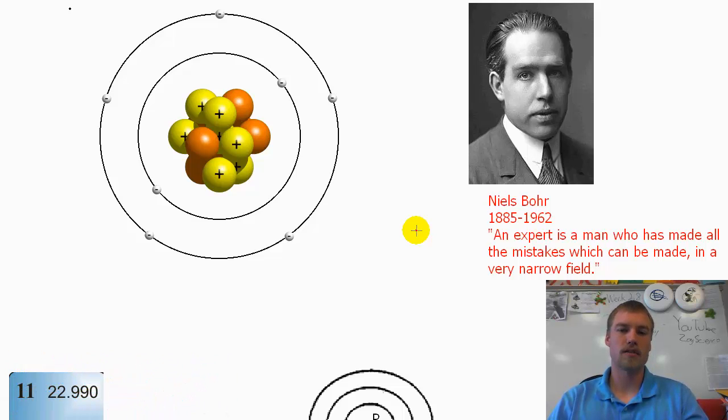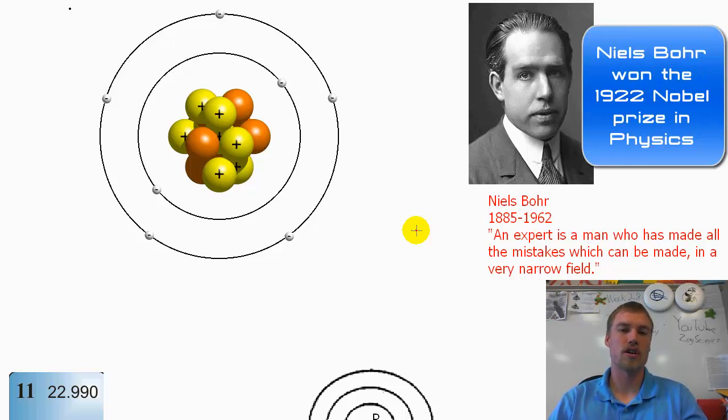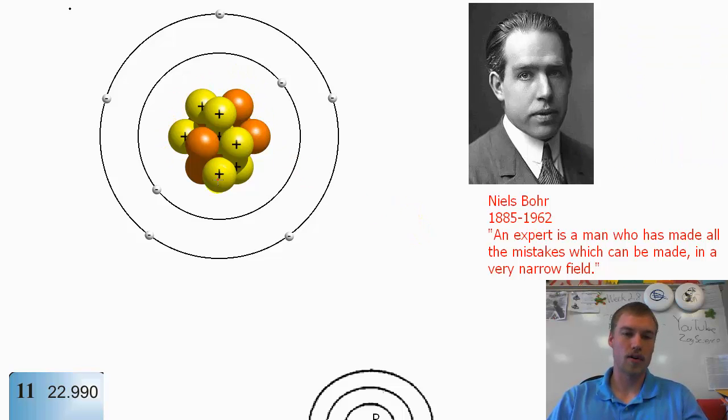The Bohr model was put forward by Niels Bohr in the early 1900s. Basically what it states is how electrons are going to be orbiting around the nucleus. So here we have our nucleus right here, and these electrons are going to be orbiting around the nucleus.